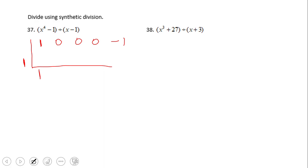We're going to drop the 1 and do the same process we did in the previous problem. 1 times 1 is 1. If we add, it's 1. 1 times 1 is 1. If we add, it's 1. 1 again, very similar. And here at the end, 1 times 1 is 1, and we get a remainder of 0.